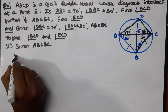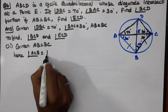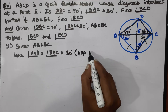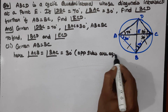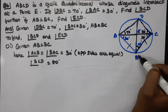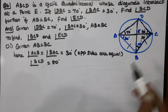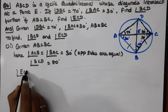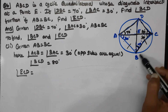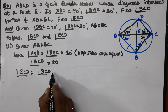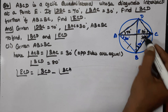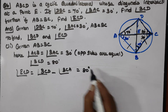Now, angle ACB equals angle BAC, which is 30 degrees, because opposite sides are equal. Angle BCD is 80 degrees. So angle ECD equals angle BCD minus angle BCA, which is 80 degrees minus 30 degrees, giving 50 degrees.